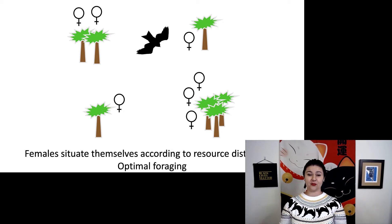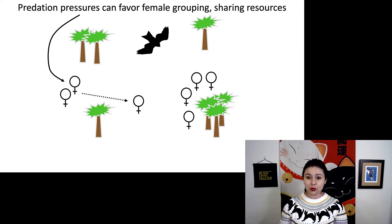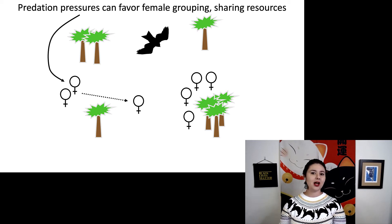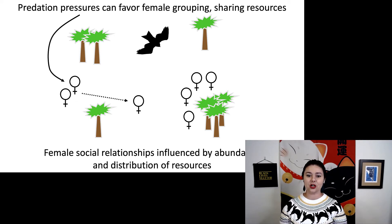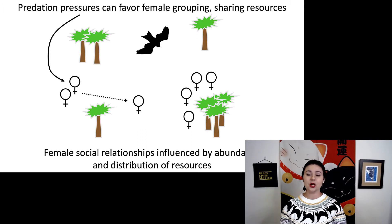But now we have a predator. The presence of these predators can favor females grouping to form a larger group and sharing those resources. So we no longer have optimal foraging, and we're encouraging the formation of a group based on this predator. Female social relationships are influenced by the abundance and distribution of resources, but also by predators in the environment.